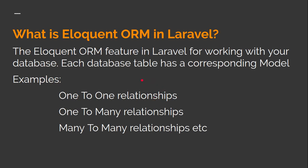What is Eloquent ORM in Laravel? Eloquent ORM is a feature of Laravel for working with the database. When you work with the database you can use the Eloquent ORM feature, and it works very efficiently. Every database table has a corresponding model. There are many kinds of ORM relationships — such as one-to-one, one-to-many, many-to-many, and more — around seven or eight in total.